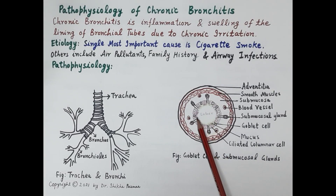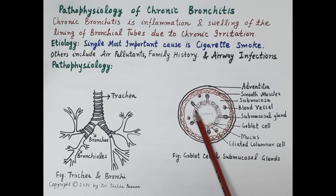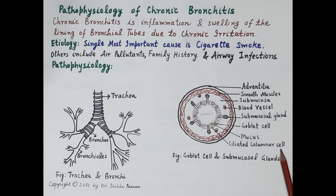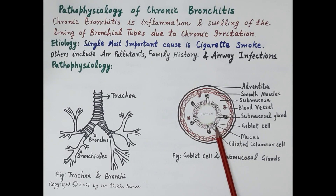The lumen is surrounded by the innermost lining of ciliated columnar epithelial cells. These ciliated columnar epithelial cells, shown here in purple, form the mucosa. In between these ciliated columnar epithelial cells are present the goblet cells, shown here in black.